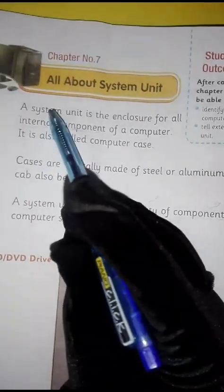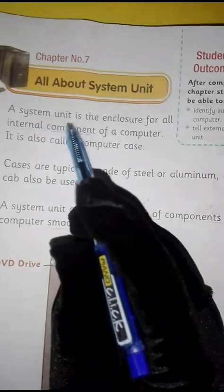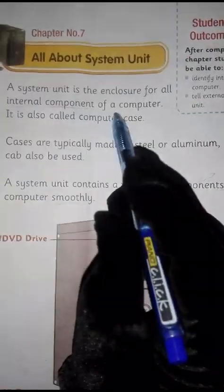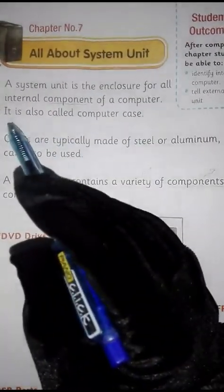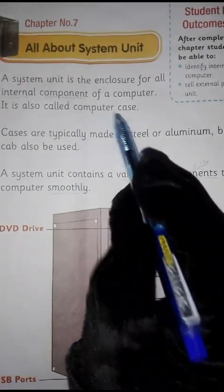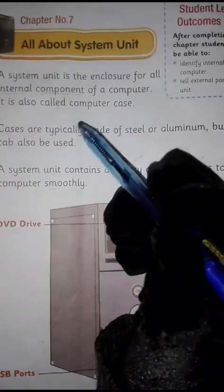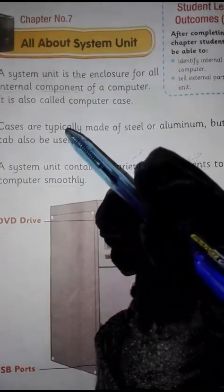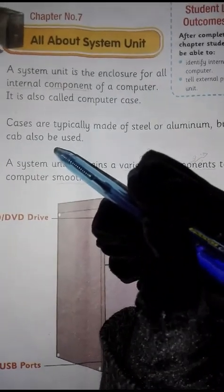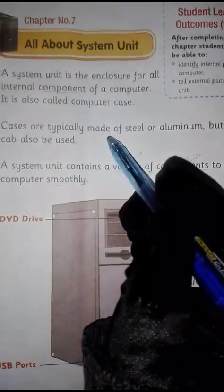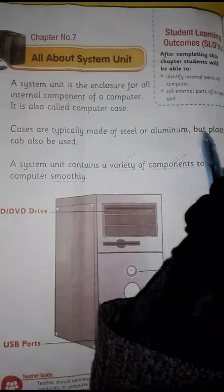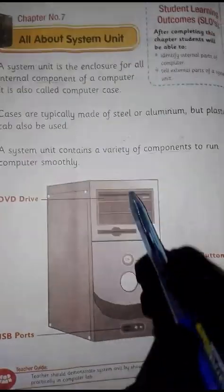A system unit is the enclosure for all internal components of a computer. It is also called a computer case. Cases are made of steel or aluminium, but plastic can also be used.